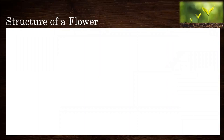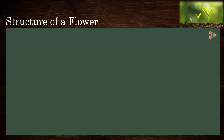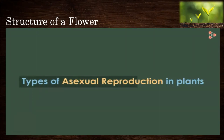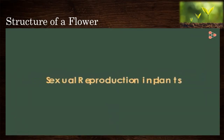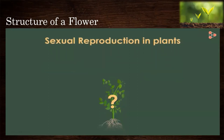Now let's watch a video about the structure of a flower. We have discussed the different types of asexual reproduction in plants, but plants are also capable of sexual reproduction. Plants possess flowers, which are the reproductive structure of the plant.